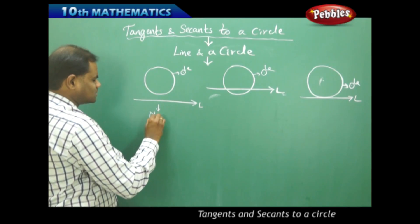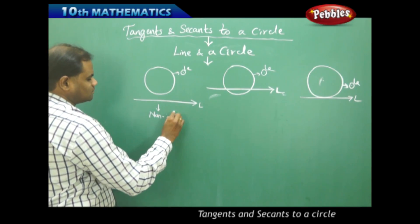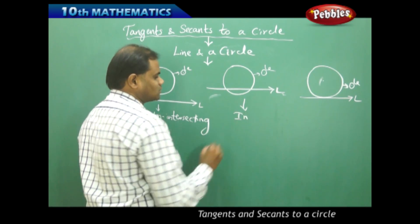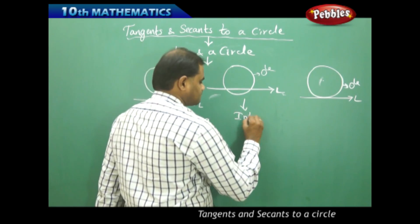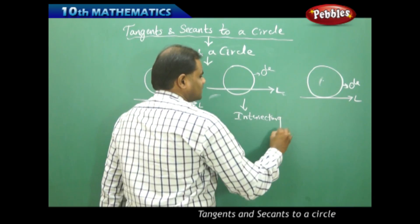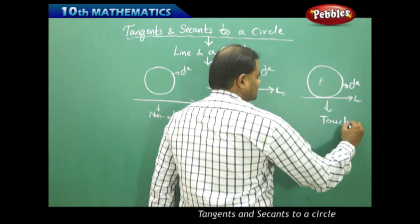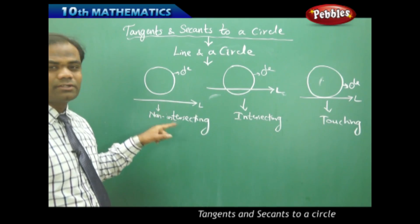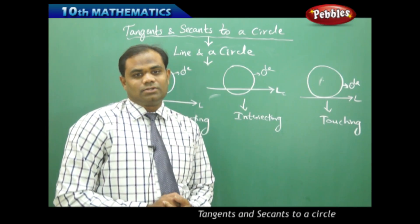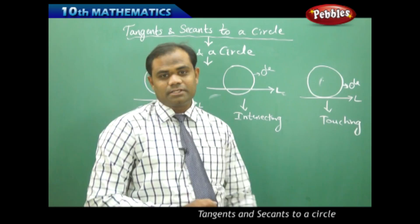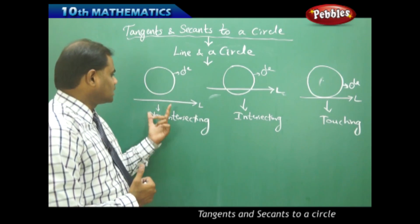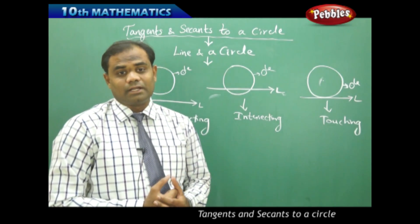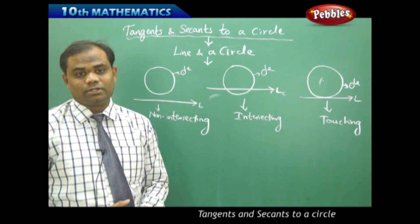So I refer to these as: non-intersecting, intersecting — intersecting at two points — and touching, because the line touches the circle. The line intersects the circle in the second case and does not intersect in the first. When the line and the circle do not intersect, mathematically we assume they have no relation because they do not intersect.